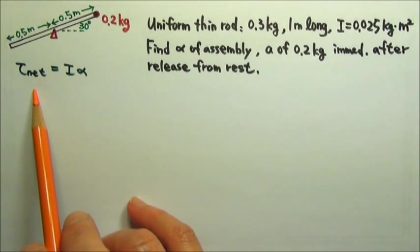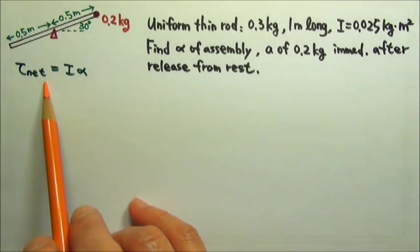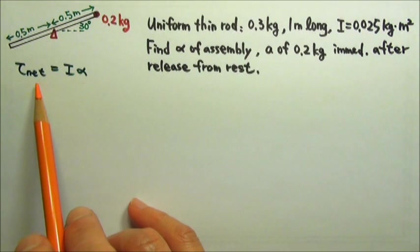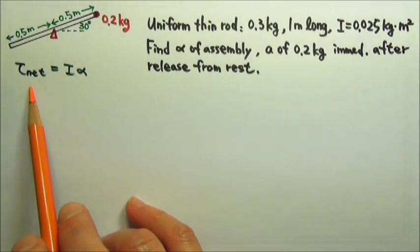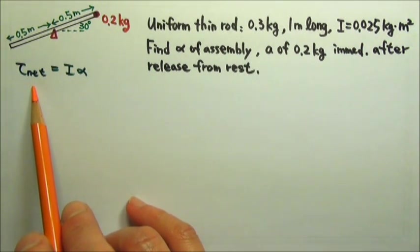To find the torque acting on the assembly, we have to draw the forces acting on it. In order for us to see torque, we have to draw forces from their points of application.